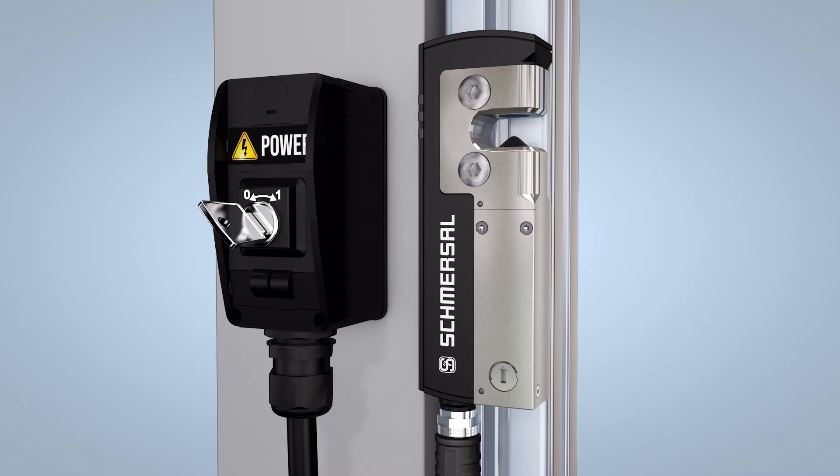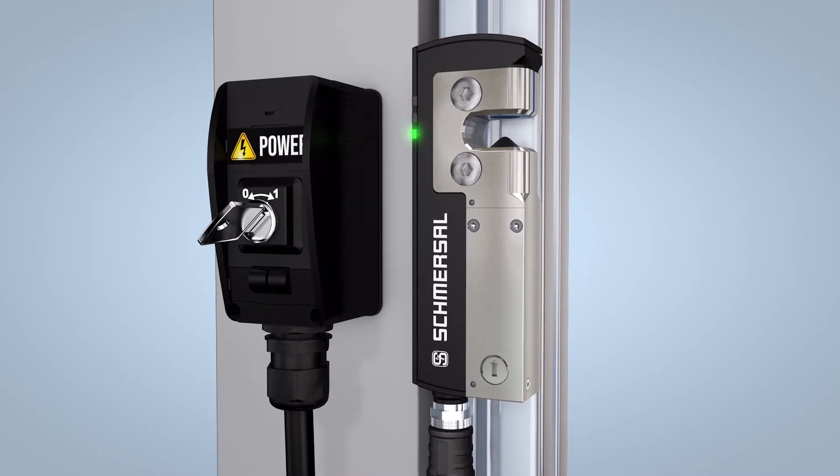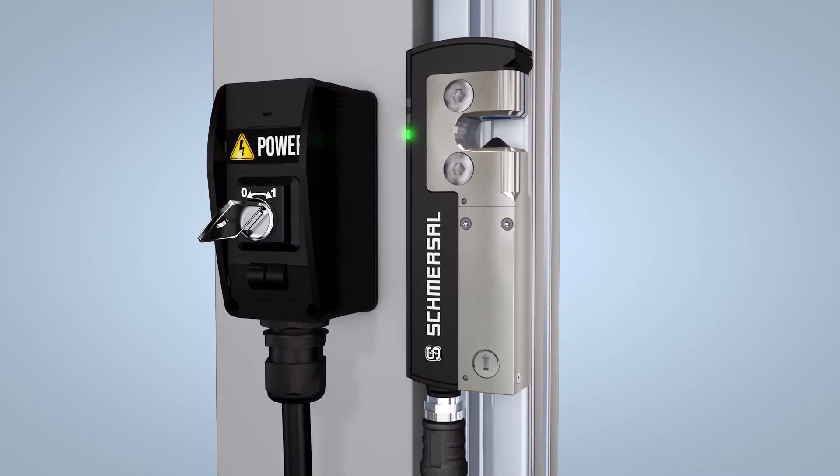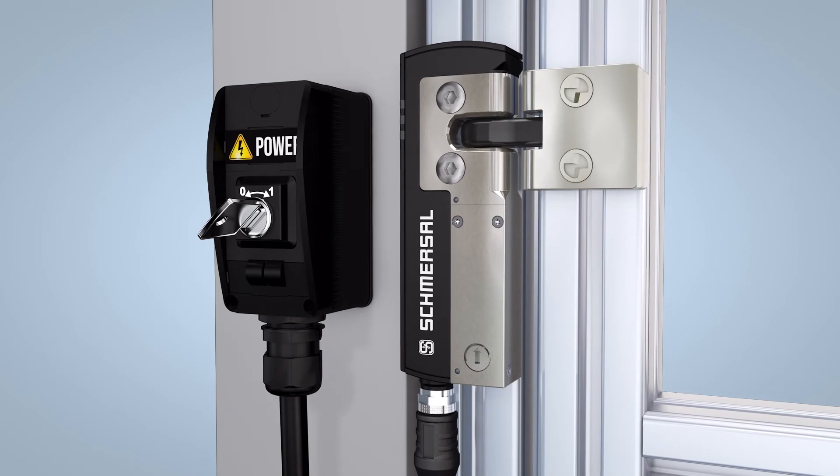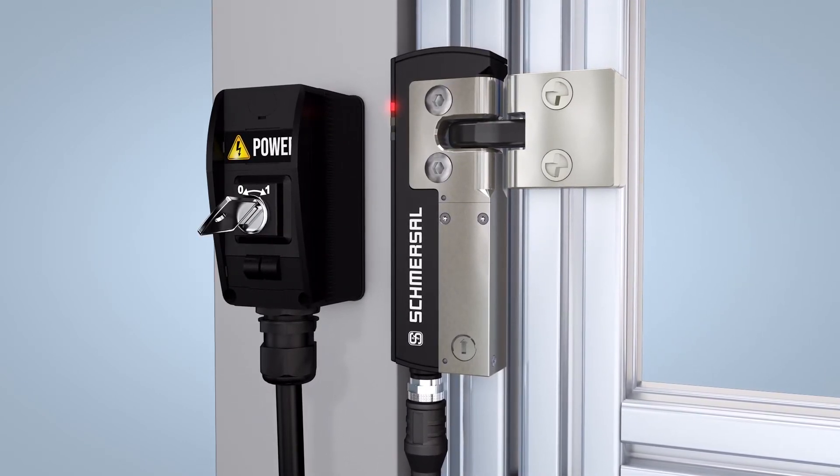Individually coded solenoid interlocks and actuators can be taught in very easily. Start by switching the solenoid interlock off. Then reapply the power and move the actuator to the detection area. The teach-in is signaled on the solenoid interlock by the red LED illuminating and the yellow LED flashing.